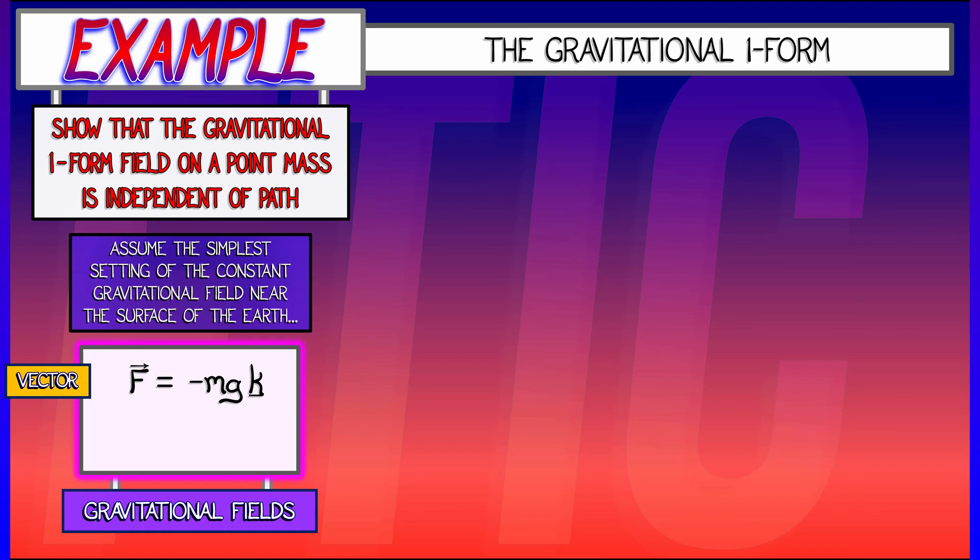m is the mass, g is the gravitation constant, and the z-axis is pointed away from the center of gravity. Then in this case, we can convert that force field, that vector field, to a one-form field, alpha sub f, given by minus mg dz.